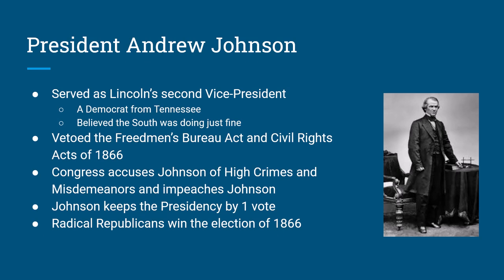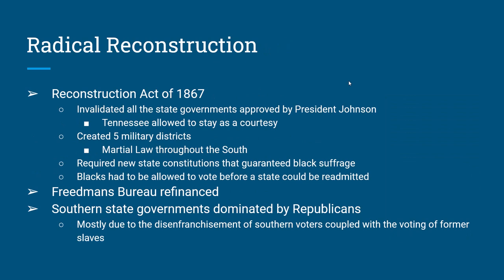When it came time to put the Freedmen's Bureau into law, Andrew Johnson vetoed it. When there was an attempt at a civil rights bill in Congress, Andrew Johnson vetoed that too. Congress disagreed with Johnson to the point that he was accused of treason and impeached. Andrew Johnson went to trial for high crimes and misdemeanors and was able to maintain his presidency by one single vote. If one more person had voted to find Johnson guilty, he would have been removed as president.